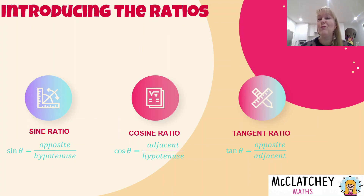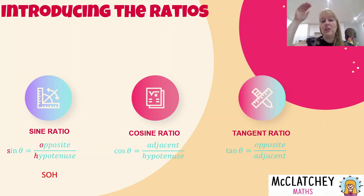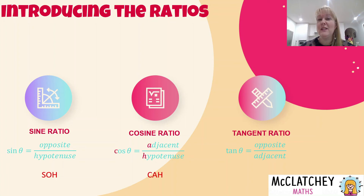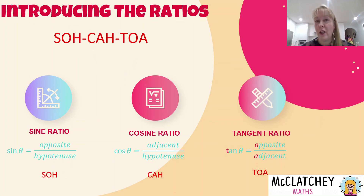There's a really cool way to remember the different formulas. For the sine ratio, take the first letter S from sine theta, then O and H from opposite over hypotenuse — that gives us SOH. For the cosine ratio, take C from cosine, then A and H from adjacent over hypotenuse — that gives us CAH. For the tangent ratio, T, O, and A from tangent equals opposite over adjacent — that gives us TOA. Bringing them all together, we have the memory tool called SOH-CAH-TOA.